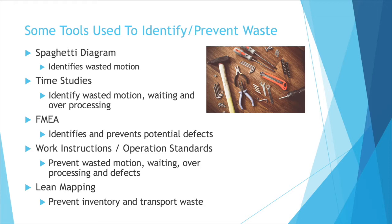Then we have work instructions or operation standards — they usually mean the same thing. These help prevent wasted motion, waiting, over-processing, and defects. Because if you know exactly what adds value and how to do a job, and you can write instructions and train people on that, you're going to prevent all those wasted things people might do if they don't know exactly how to do their job. Then we have lean mapping, which is a very high-level overview of how your supply chain and processing works. This helps prevent inventory and transport waste — if you know exactly when you need your product, when to ship it, where it should go, and all the relevant suppliers and carriers.